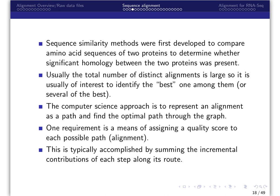Sequence similarity methods were first developed to compare amino acid sequences of two proteins to determine whether significant homology between the two proteins was present. Usually, the total number of distinct alignments is so large that it is usually of interest to identify the best alignment among them. The computer science approach is to represent an alignment as a path and to find the optimal path through the graph.